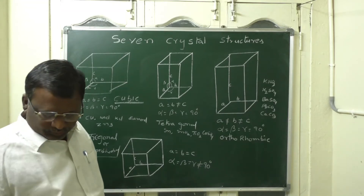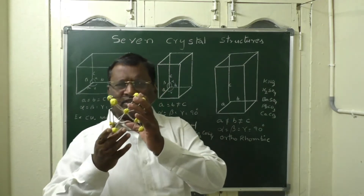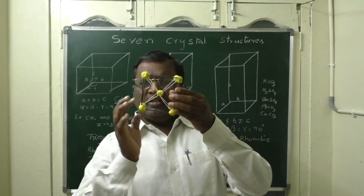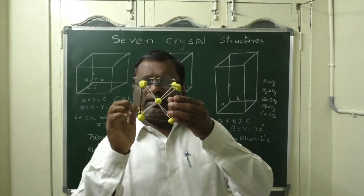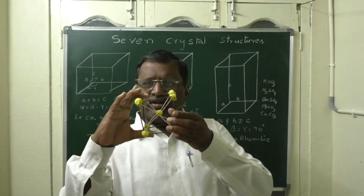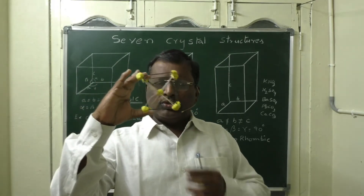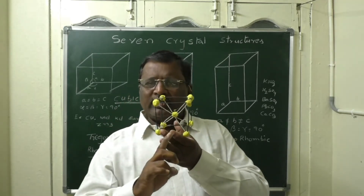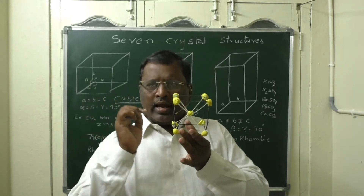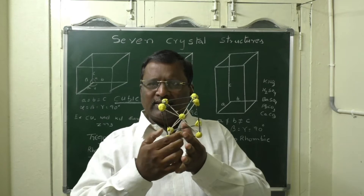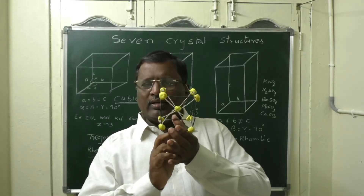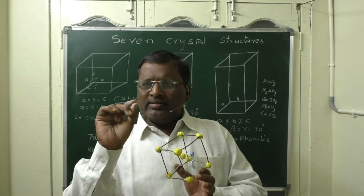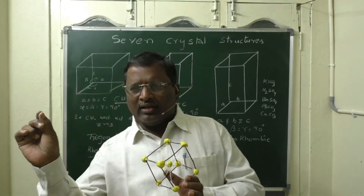Now, cubic — this is a cubic structure. A cubic structure has length, width, and height: a, b, and c. Here all are equal in size and equal in magnitude — the length, width, and height are the same. So a is equal to b is equal to c. And the angles between any two sides — alpha, beta, and gamma — are all 90 degrees.